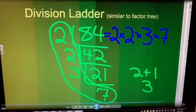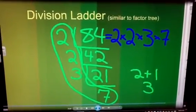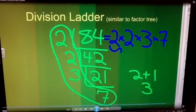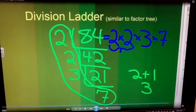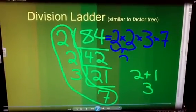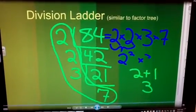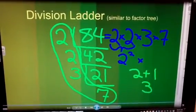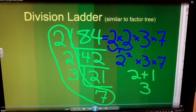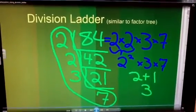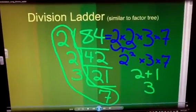And if you want to extend the learning a little bit, we could even break this down. And since we have two of the base number two, we could make that in exponent form, in which we take two to the second power times three times seven. And our prime factorization of 84 using the division ladder looks just like this.